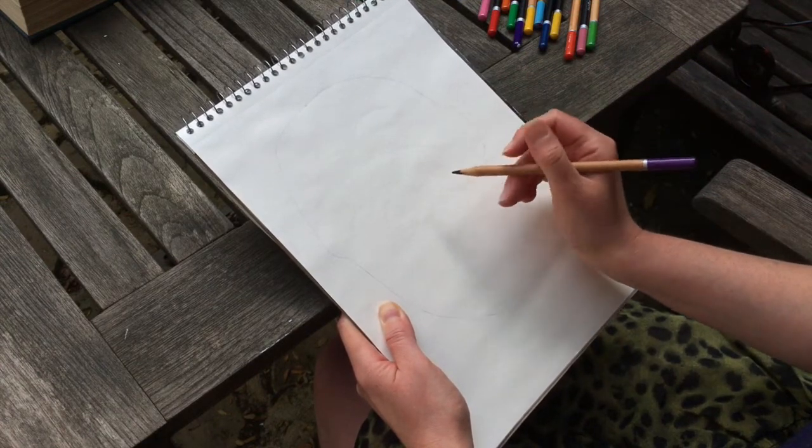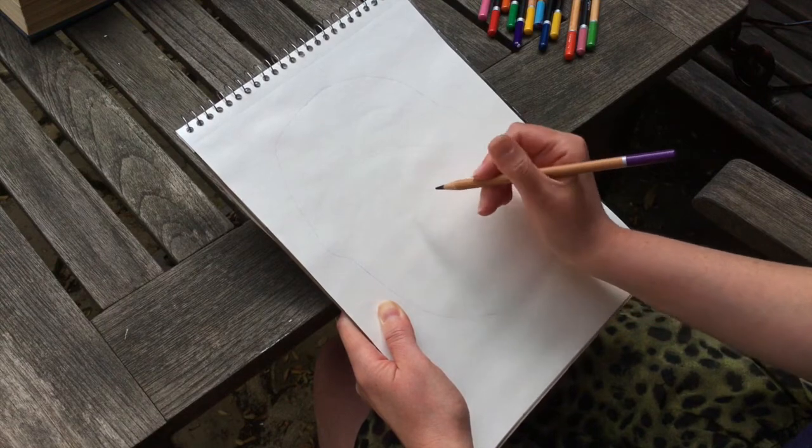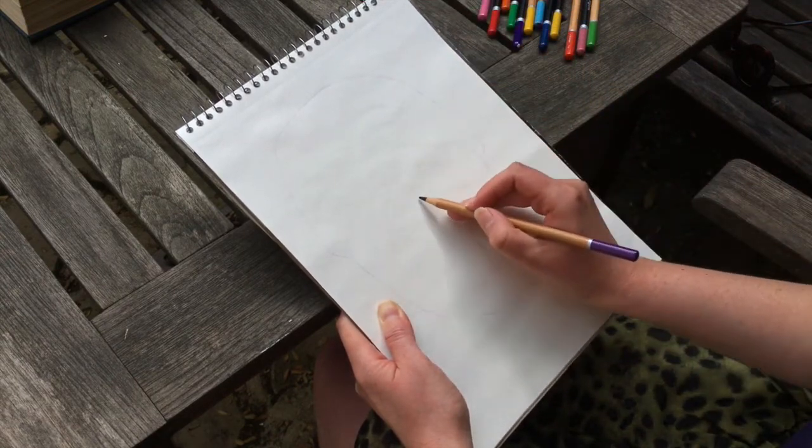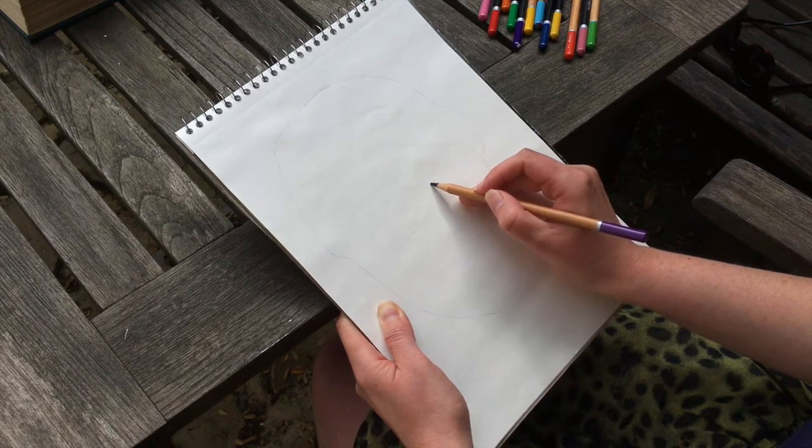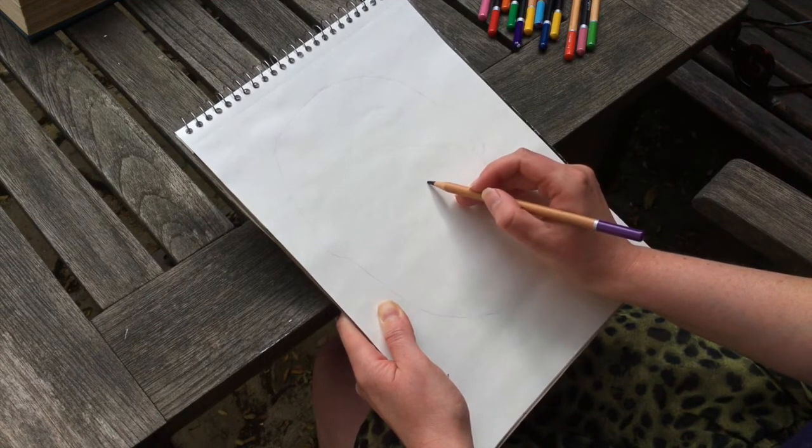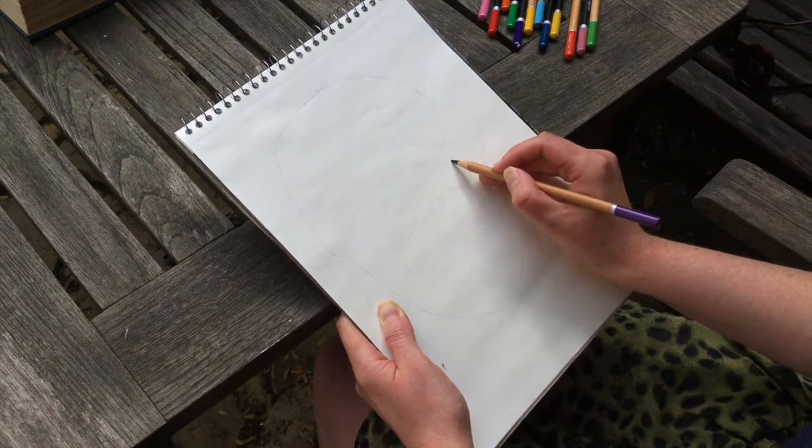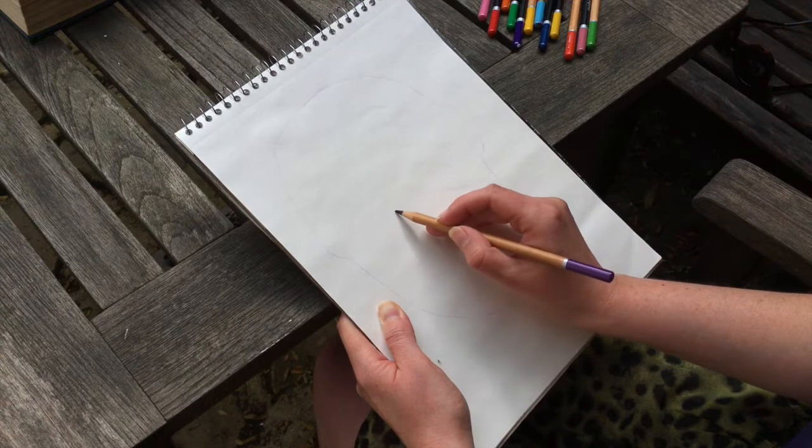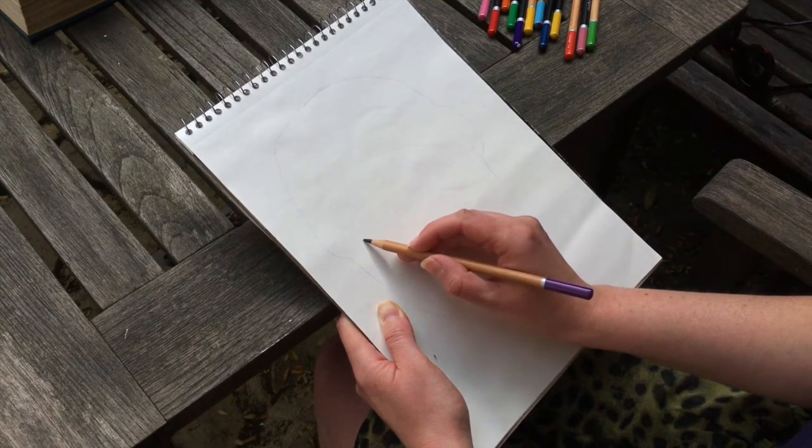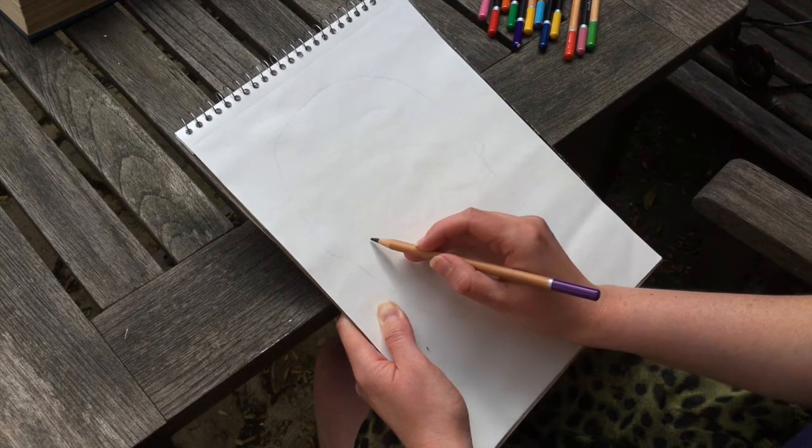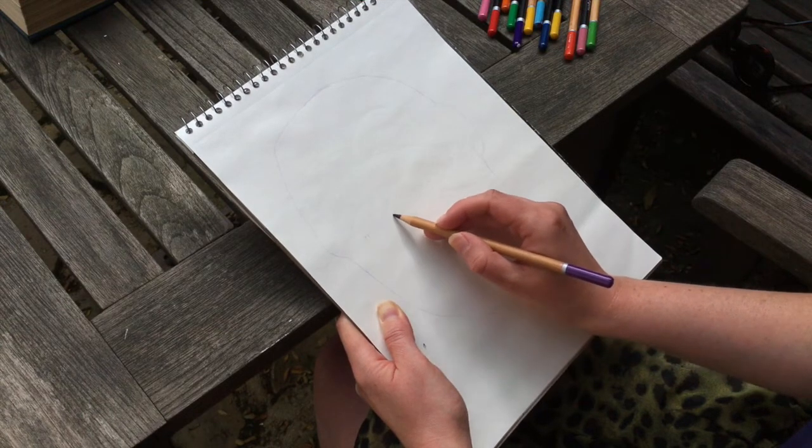And then step four is for eyes. So we know the eyes are halfway down the head. And looking at the width of them, on my face there's about five eyes width of eyes across my head. And the space between my eyes is the same as the width of one eye.